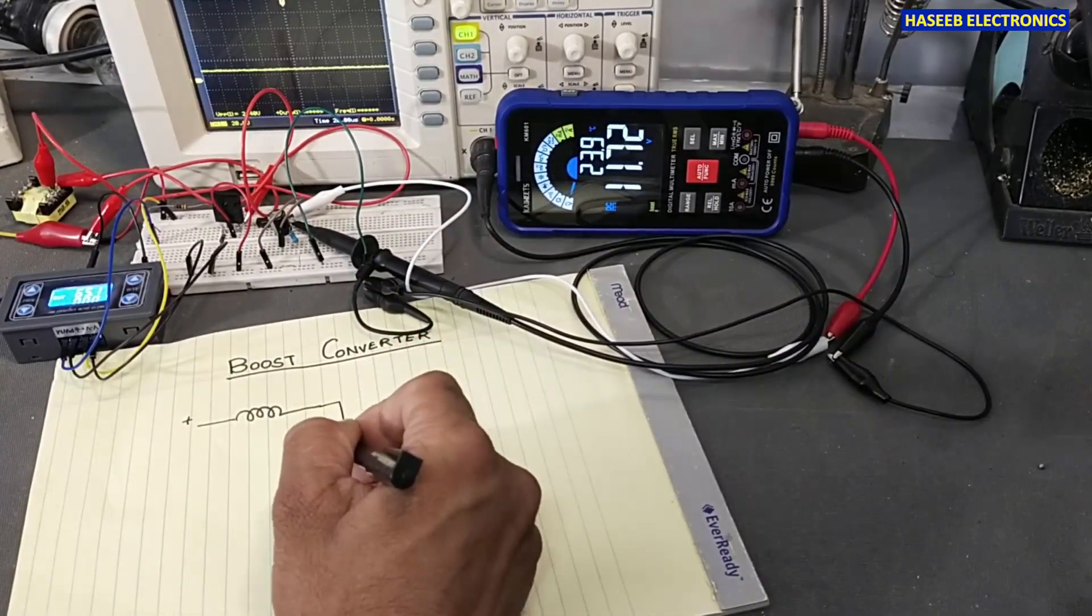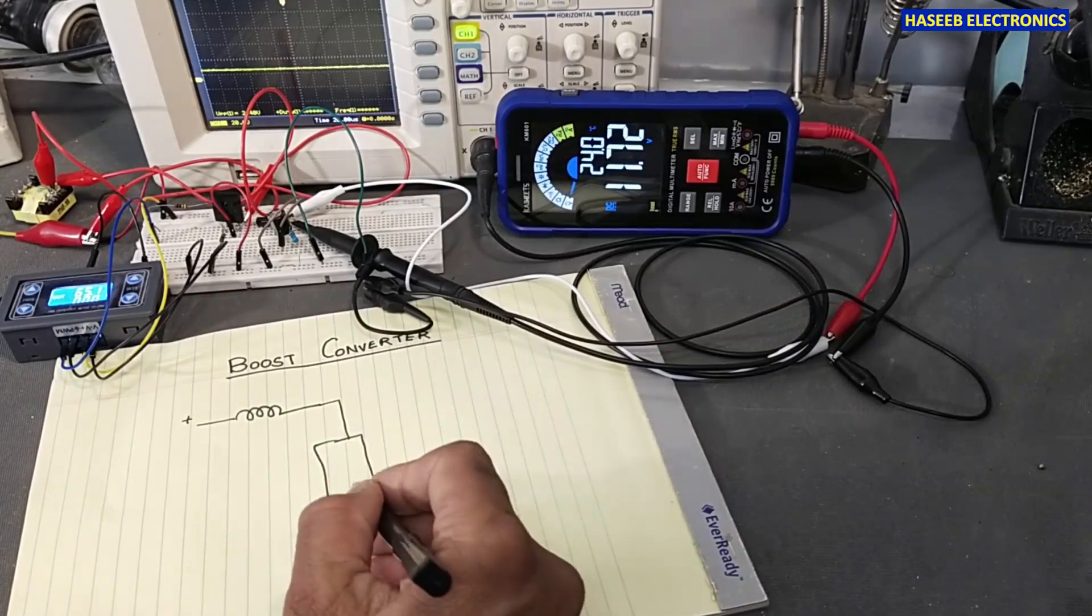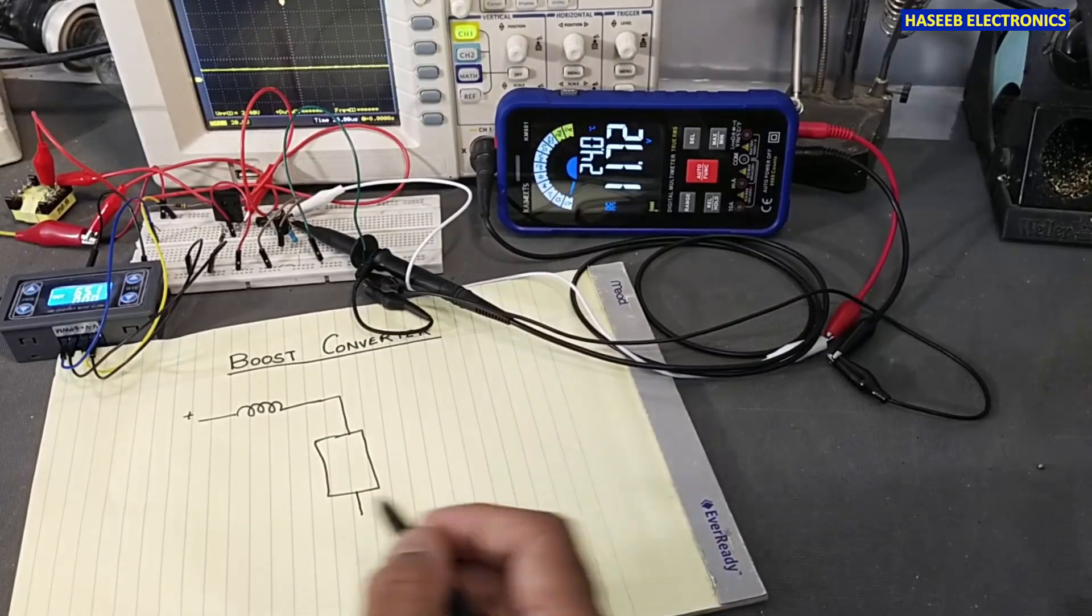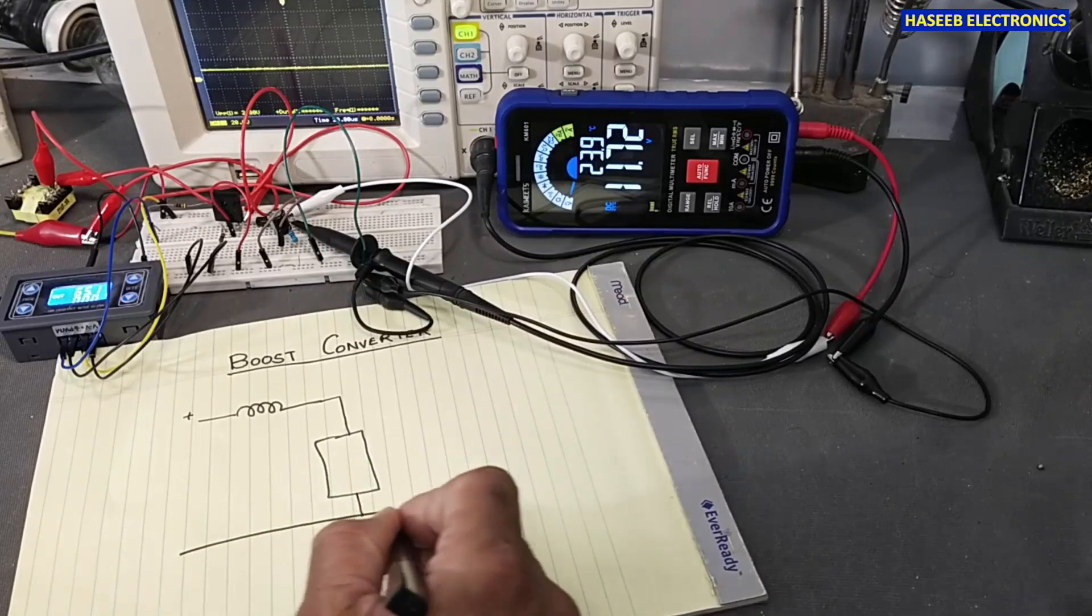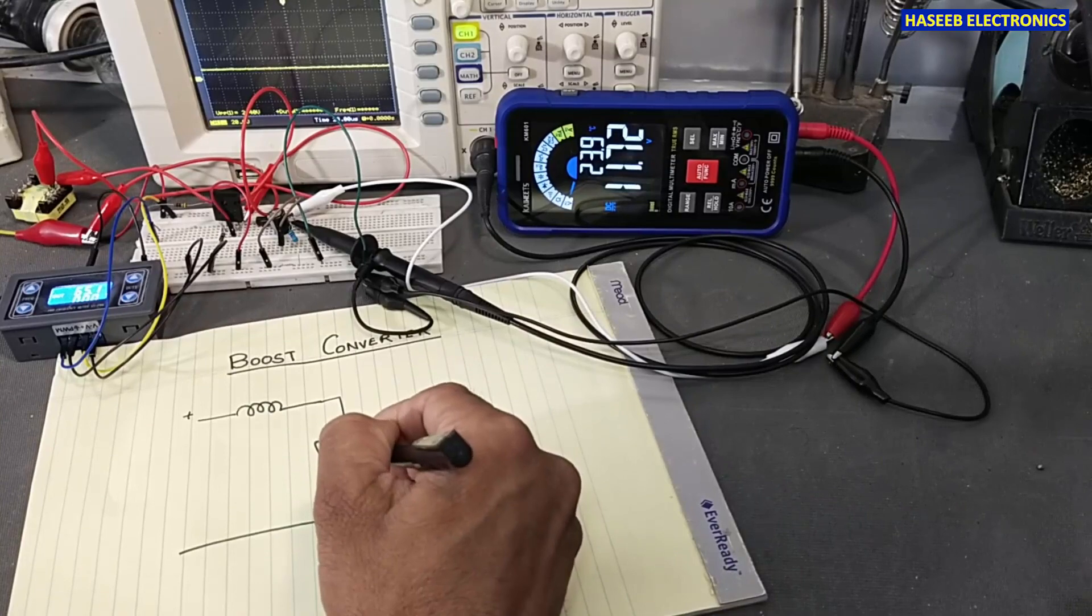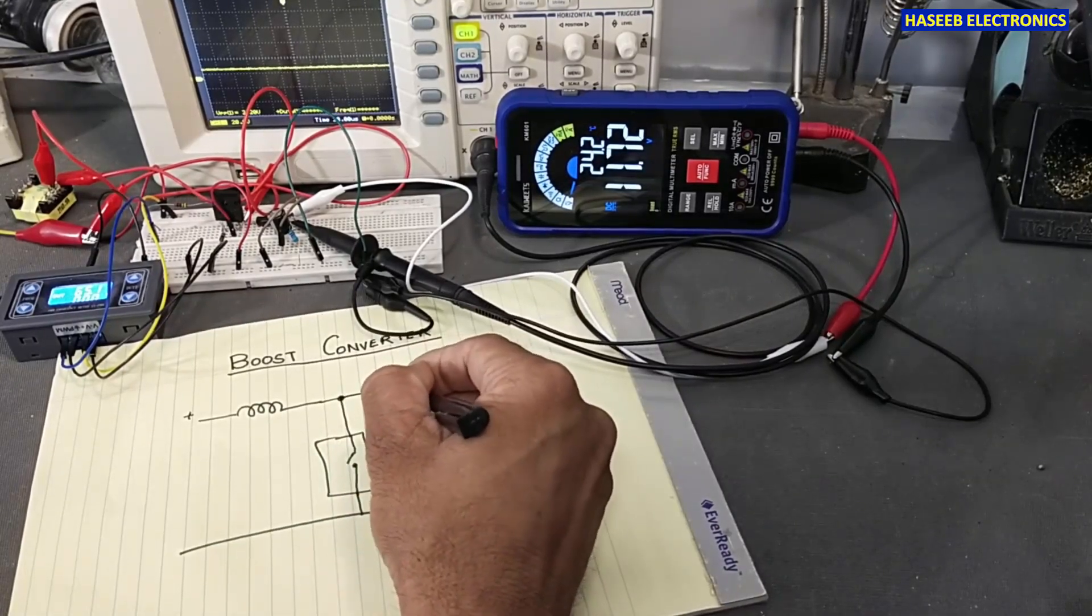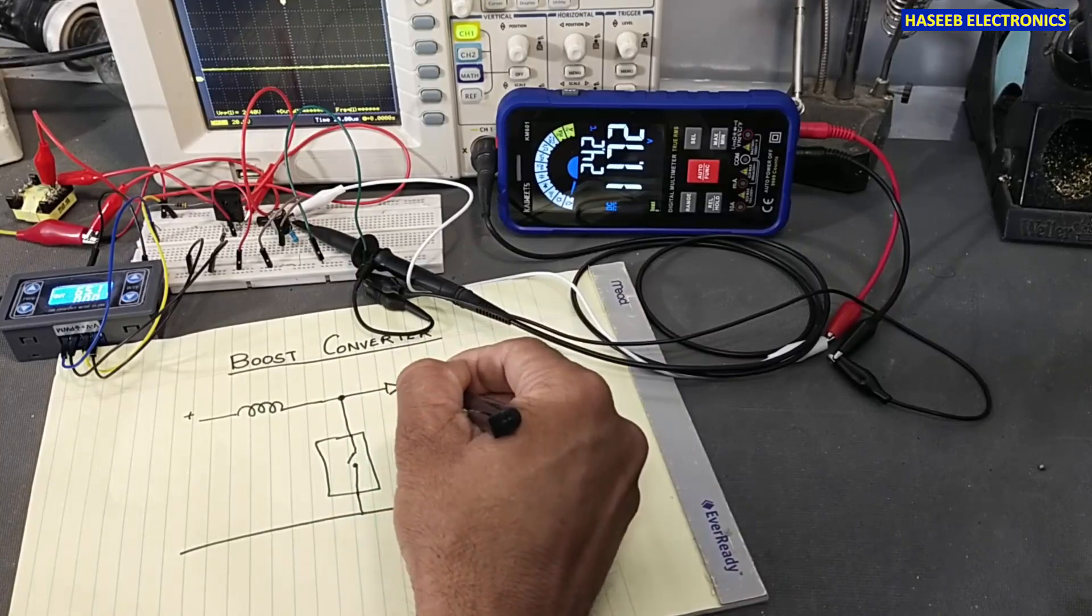And then we connect the switch here - transistor, MOSFET, IGBT, whatsoever - and we connect this to the return line. We can say this is our switch.